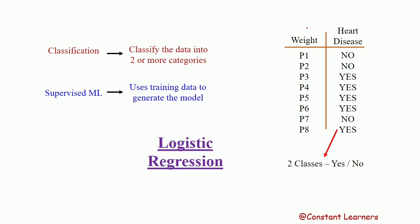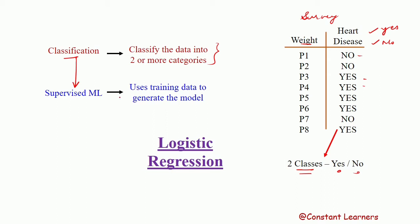In this video we have a survey about some people with a particular weight. They have a heart disease — that means yes — or they do not have a heart disease — no. So our outputs are in the form of no and yes, which means we are classifying our output into two classes: yes and no. Whenever we classify data into two or more categories, we call it classification.